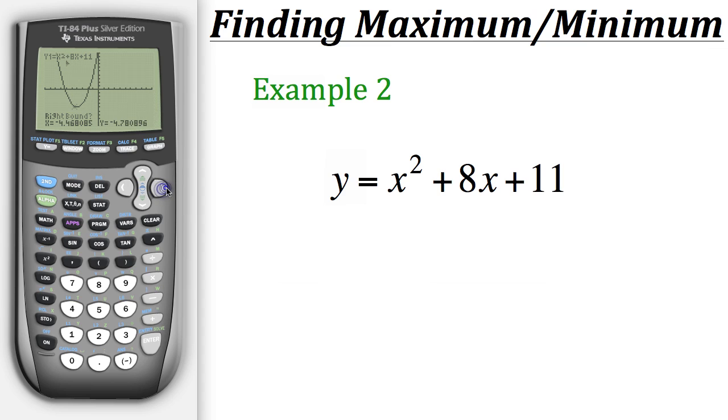Now we need to find the right bound. So we'll go back to the general minimum point area and then go a little bit to the right of it and then hit enter.